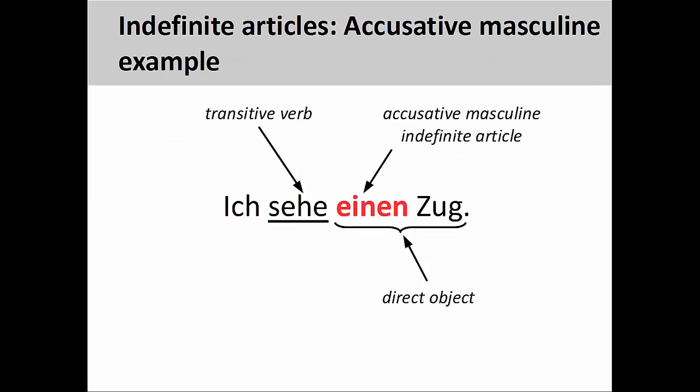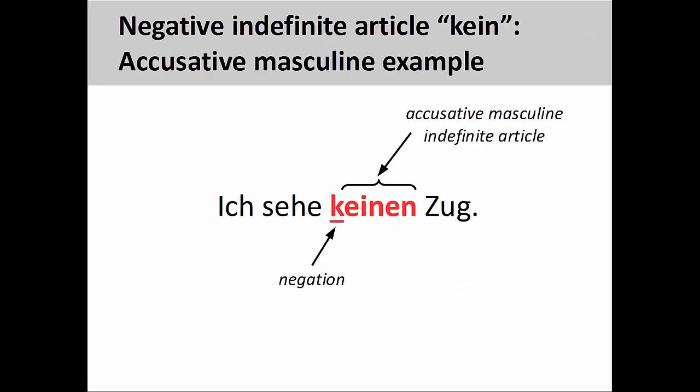Let's take a closer look at how kein functions. In the sentence you see here, ich sehe einen Zug — I see a train — the direct object of the sentence is einen Zug, as it receives the action of the verb sehe. The direct object is indicated by the masculine accusative ending on the indefinite article. To negate this sentence, we simply need to change einen into keinen: ich sehe keinen Zug — I don't see a train, or I don't see any train.